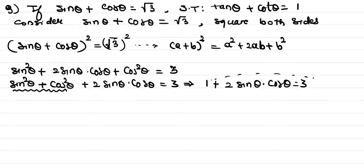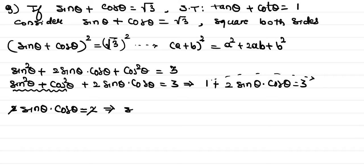Moving the 1 to the right-hand side, we get 2 sin θ · cos θ = 2. Cancelling the 2 from both sides gives sin θ · cos θ = 1.